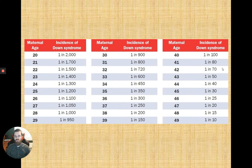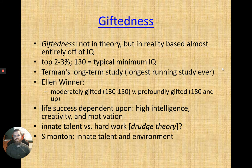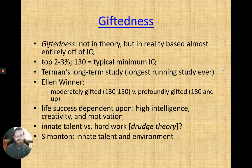On the other end is giftedness — a high IQ compared to the average, representing only the top 2 to 3 percent of society. The typical minimum IQ for giftedness is 130 or higher. An IQ of 110 is great, but the distinct label of giftedness requires 130 or above.